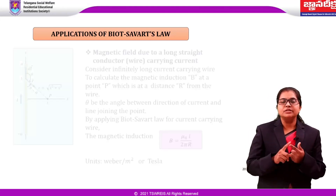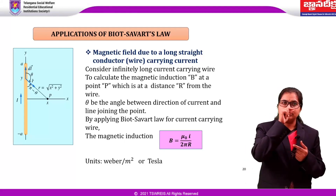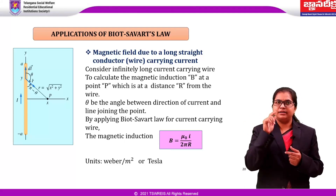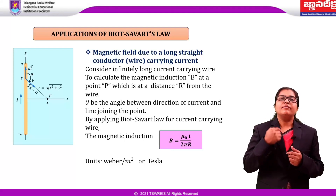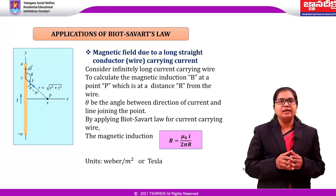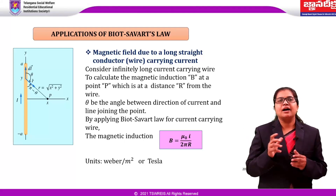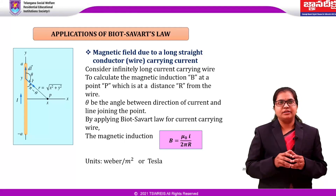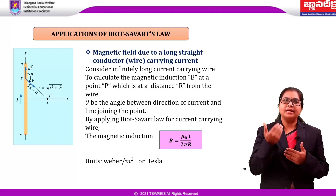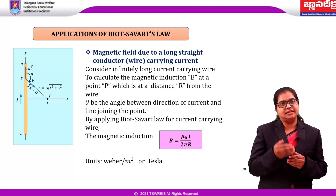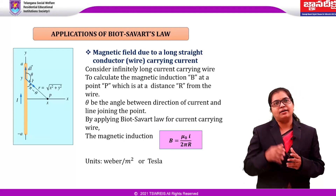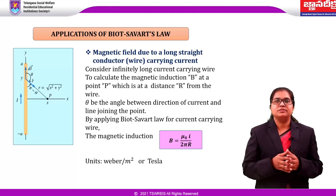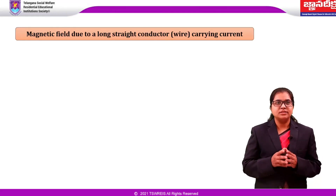We have two applications of Biot-Savart's law. The first application is the magnetic field due to a long straight conductor carrying current. Consider an infinitely long current-carrying wire carrying current I. It creates a magnetic field. Our aim is to calculate the magnetic induction B at a point P which is at a distance r from the wire, where θ is the angle between the direction of current and the line joining the point. By applying Biot-Savart's law for a current-carrying wire, the magnetic induction is B equals μ₀I / 2πr. The units are Weber per meter square or Tesla.